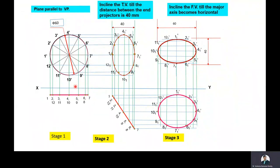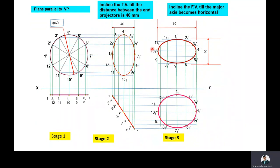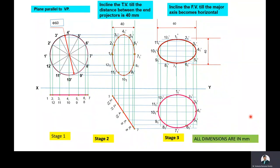To summarize: Stage 1 — the plane is parallel to VP and perpendicular to HP. Stage 2 — we incline the first stage top view such that the end projector distance becomes 40 mm, which is the length of the minor axis. Stage 3 — we tilt the front view such that the major axis (4-1-dash to 10-1-dash) becomes horizontal. The diameter of the circular plate is 60 mm, the major axis of the ellipse is 60 mm, and the minor axis is 40 mm — all dimensions in millimeters.